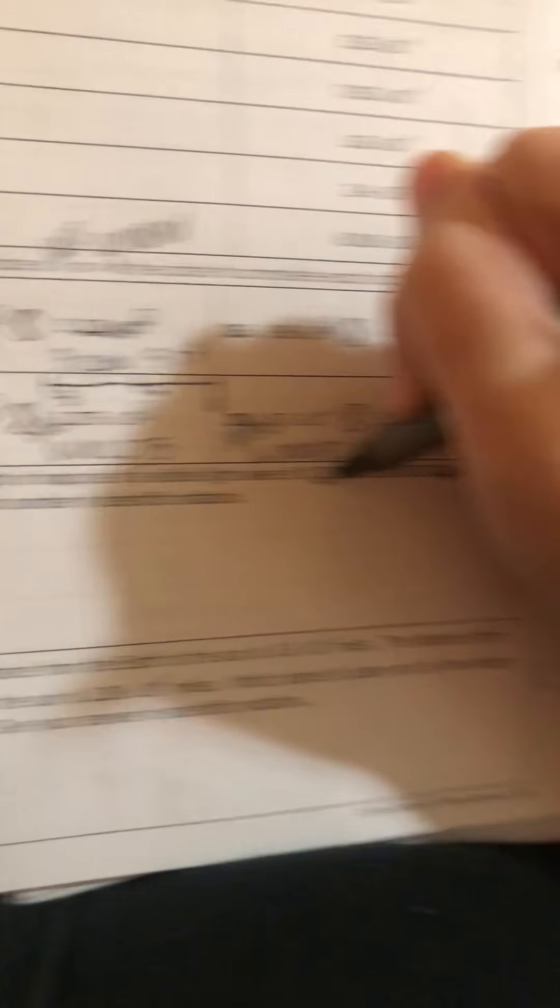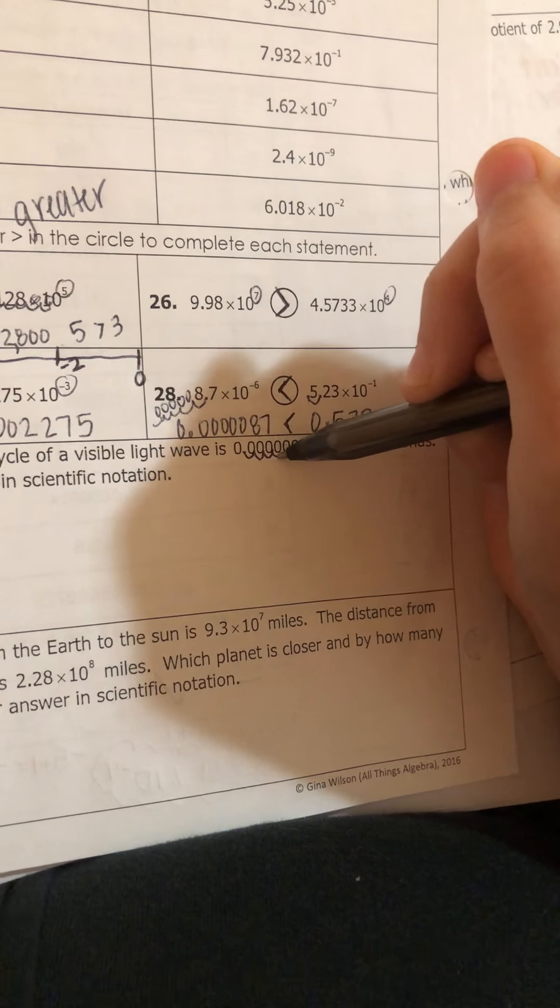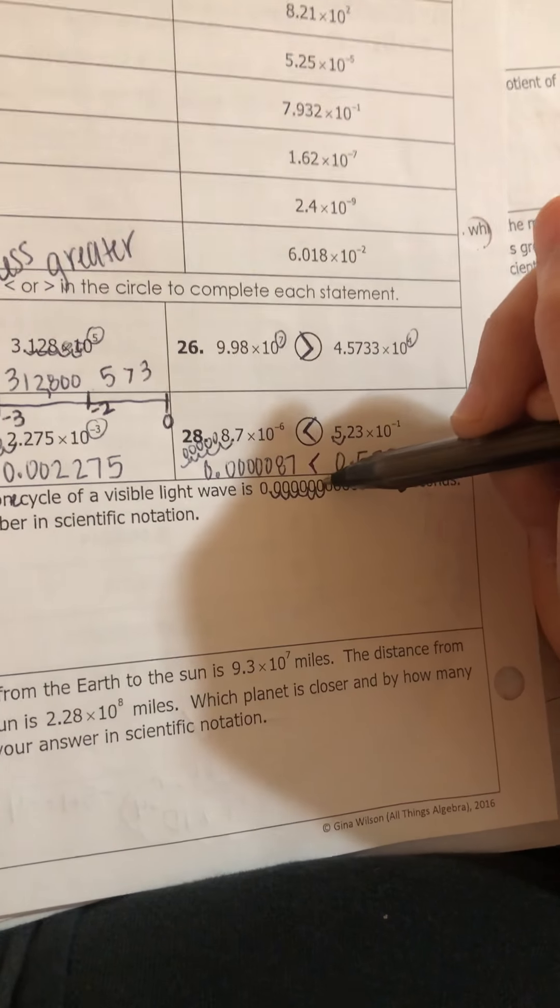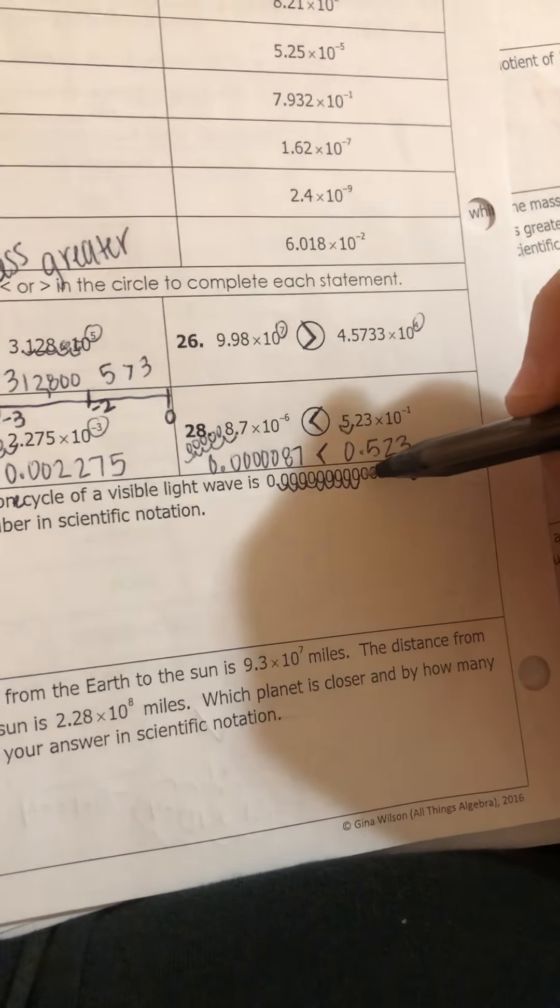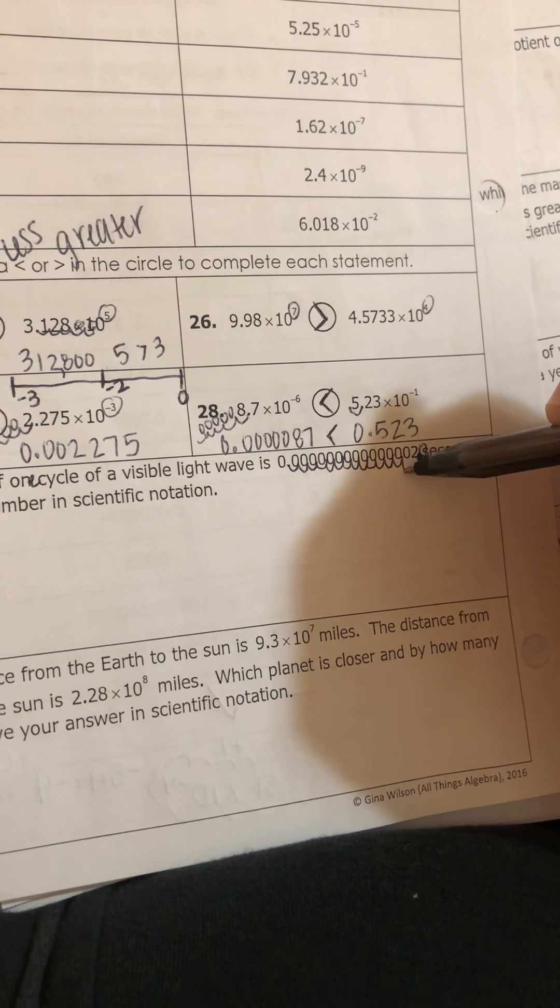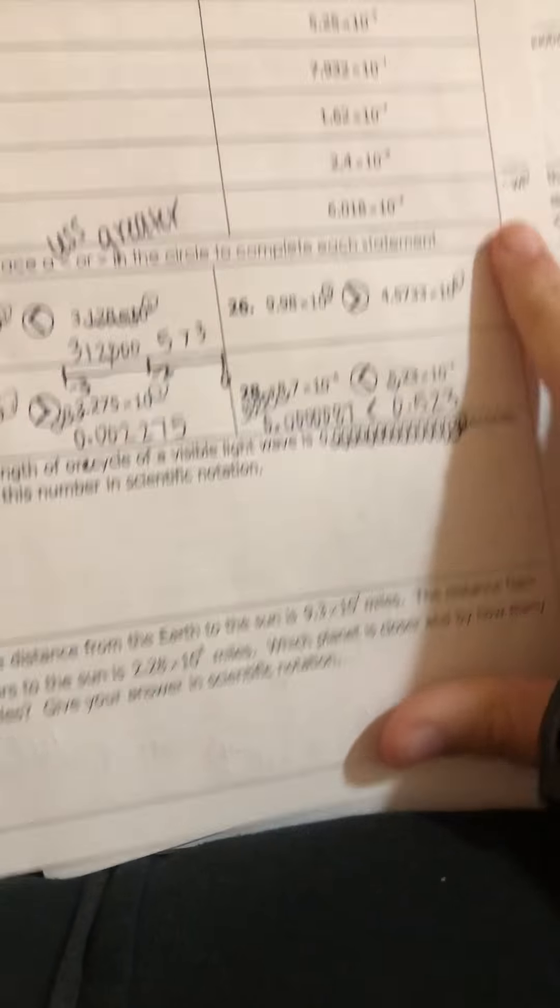So 1, 2, 3, 4, 5, 6, 7, 8, 9, 10, 11, 12, 13, 14, 15 swoops. And this is a really tiny number.